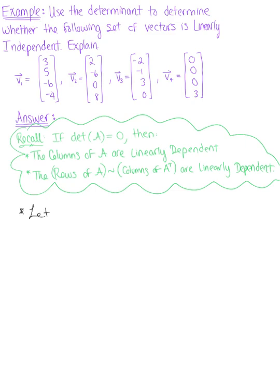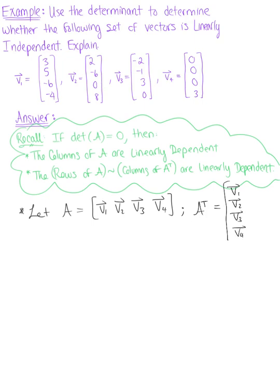To get us started, we can let matrix A be defined by the column vectors V1, V2, V3, and V4. From here we can state that A transpose is the matrix defined by the row vectors V1, V2, V3, V4. This reminds us that we can use either matrix A or A transpose to find the determinant and determine if these vectors are linearly independent or dependent. Just for fun, we'll use A transpose.